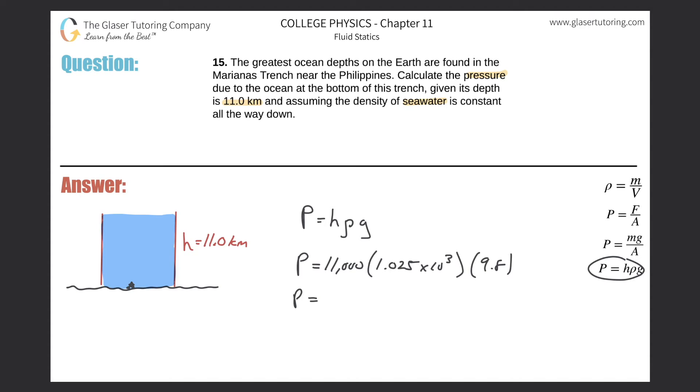Let's just do the calculation now. So this is 11,000 multiplied by 1.025 times 10 to the third times 9.8, and we get a value of approximately 1.10 times 10 raised to the eighth.